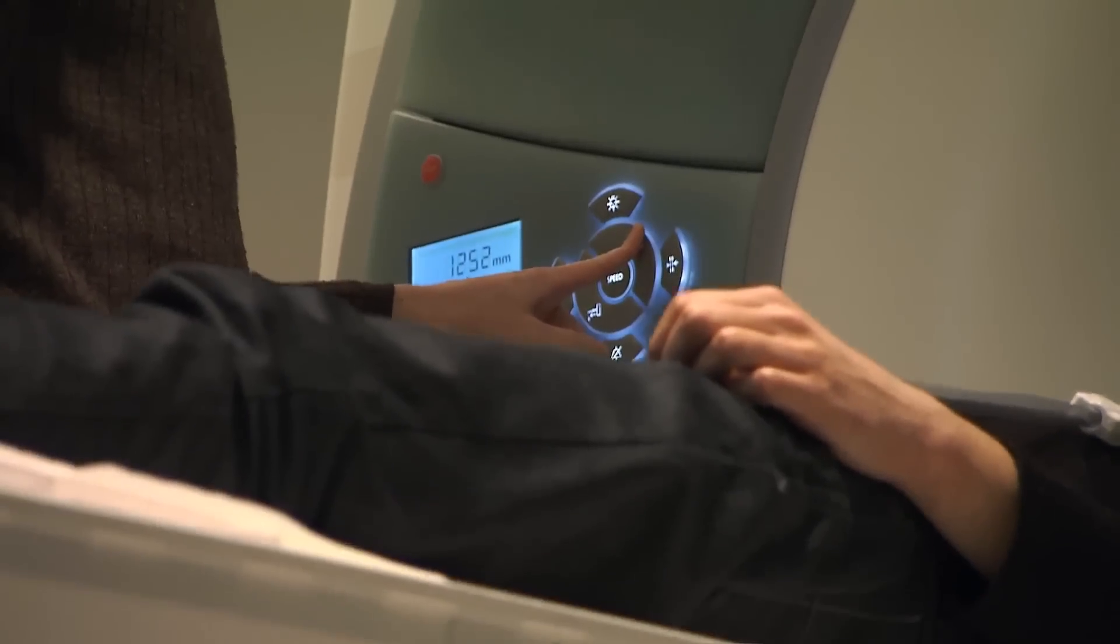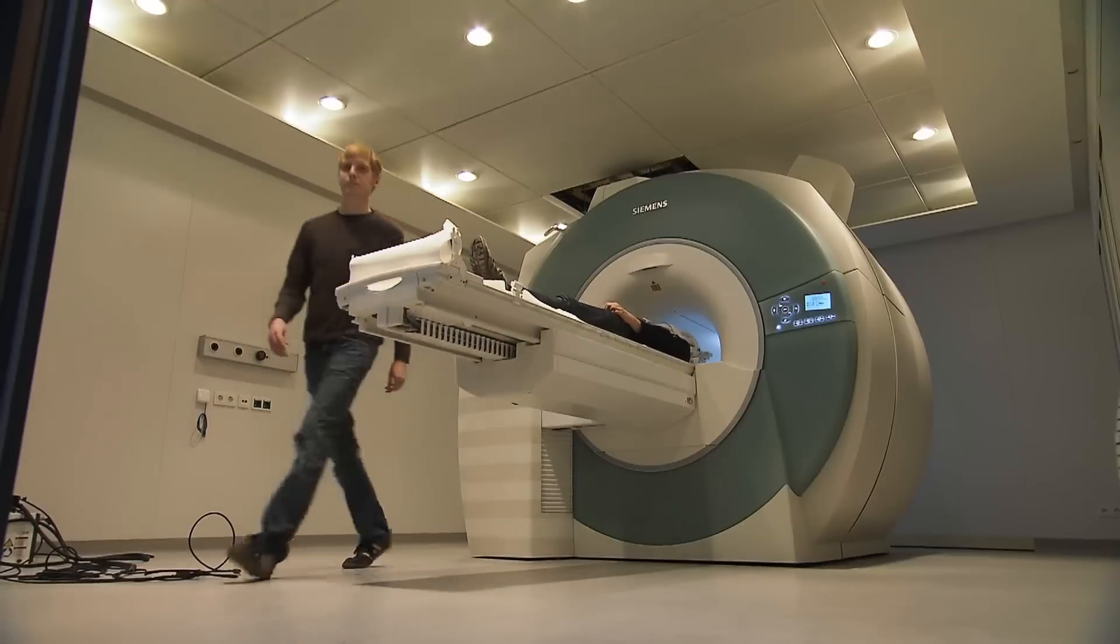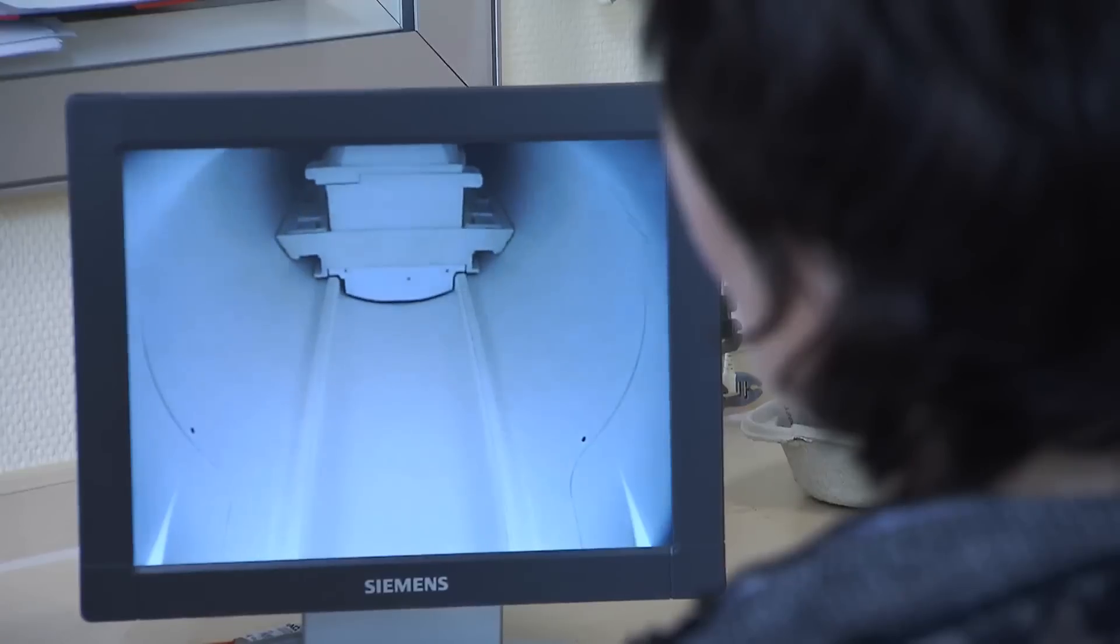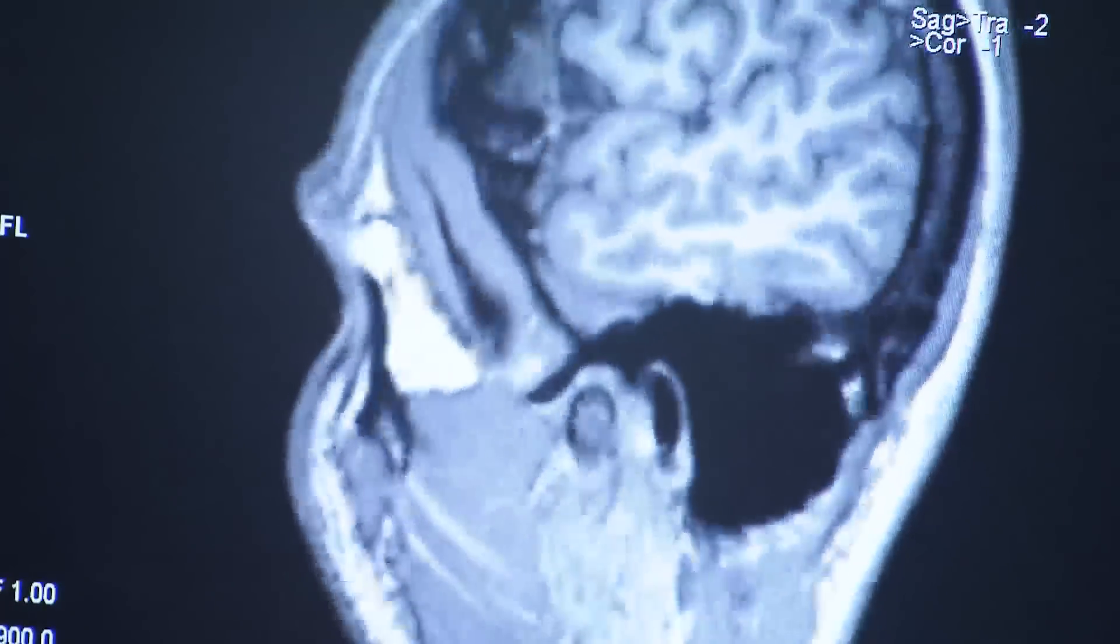At the Bernstein Centre, researchers working in interdisciplinary research groups measure neuronal activity to decode thought patterns of the brain. Observations of the human brain are a key element of the research work at the centre.